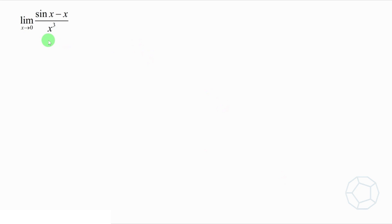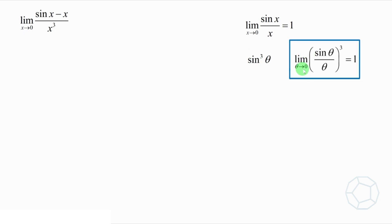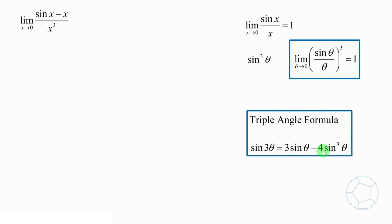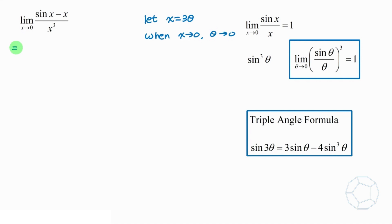In the detailed solutions, we work out the three limits one by one. Let's start with the limit as x tends to 0 of sine x minus x over x cubed. We apply the famous result: limit as x tends to 0 of sine x over x equals 1. Because we have x cubed in the denominator, we substitute to obtain sine cubed theta, so that the limit of sine theta over theta whole cube equals 1. The triple angle formula has the cube term: sine 3 theta equals 3 sine theta minus 4 sine cubed theta. Therefore, we let x equal 3 theta. When x tends to 0, theta tends to 0, and the limit becomes the limit as theta tends to 0 of sine 3 theta minus 3 theta all over 3 theta whole cubed.